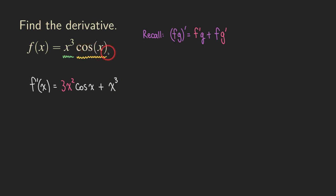And then what about the second function? We need to take the derivative of the second function, which will be, in this case, negative sine of x. Yeah, the derivative of cosine of x is negative sine of x.